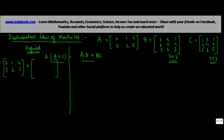We start adding the corresponding elements: 1 plus 1 gives 2, 2 plus 2 gives 4, 3 plus 5 gives 8. Similarly, 4 plus 3 gives 7, 5 plus 4 gives 9, 6 plus 6 gives 12. Again, 1 plus 1 gives 2, 2 plus 2 gives 4, and 5 plus 3 gives 8.